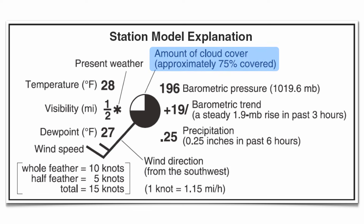The next variable is going to be cloud cover. Cloud cover is going to be the central circle of your station model. It's broken up for the most part into 25 percent increments. Completely clear skies would have no filling at all; complete overcast skies would be 100 percent filled in, with increments of 25 in between. Cloud cover goes right along with the amount of humidity in the air.